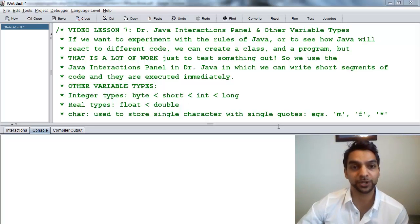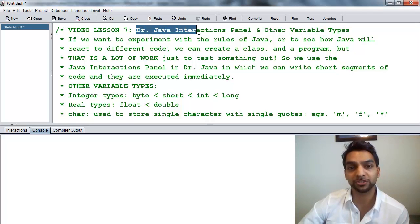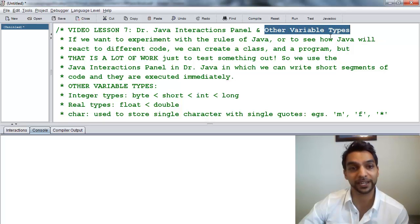Hello, this is Mr. Cardoso, and this is video lesson number seven. In this video lesson, we're going to look at the Dr. Java Interactions panel, and as well, some other variable types while we're at it.